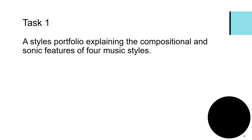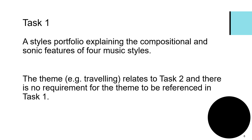In the previous Bitesize video, we looked at the fact that learners would be set two tasks. Task one is where they need to generate a styles portfolio, explaining the compositional and sonic features of four chosen musical styles. The theme — for example, travelling — only really relates to task two, and there is no requirement for that theme to be referenced in task one. Learners can select their four chosen musical styles, ensuring that only two come from the area of popular music, without any need to cover the set theme in task one.